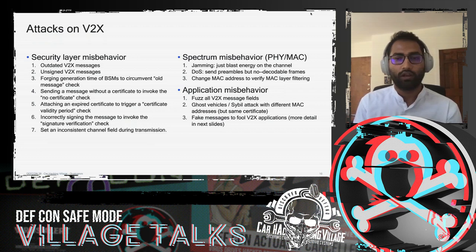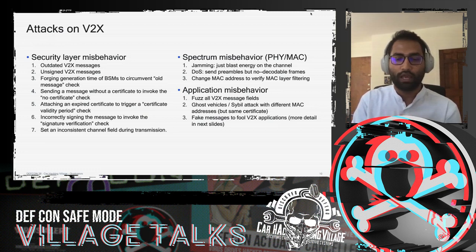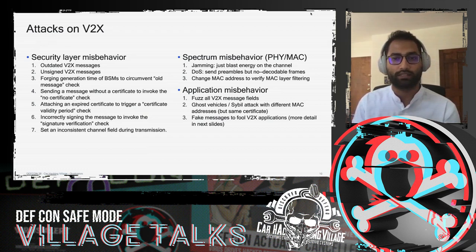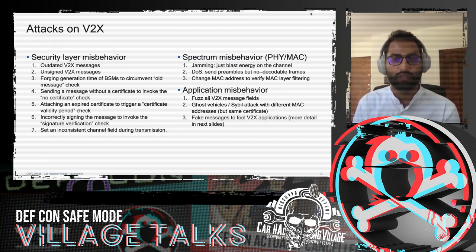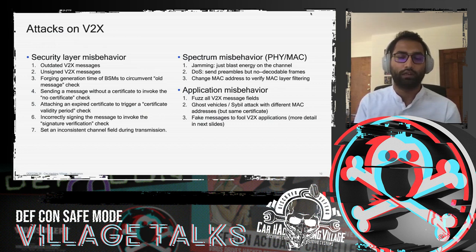At the application layer, the attacker could fuzz all fields — sending speeds from minus infinity to infinity — to test what the receiver accepts. As shown in the Sybil attack example, attackers can use the same or different pseudonym certificates to create ghost vehicles. Lastly, the attacker can formulate specific messages to fool V2X applications — which we'll now discuss in detail using the EEBL application.